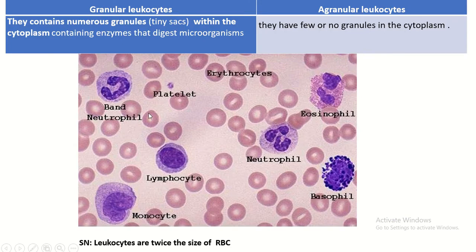The granular leucocytes contain numerous granules — tiny sacs within the cytoplasm that contain enzymes which digest microorganisms. This is eosinophil containing granules, this is neutrophil, and this is basophil. The agranular leucocytes have few or no granules in the cytoplasm. This is lymphocyte, this is monocyte.